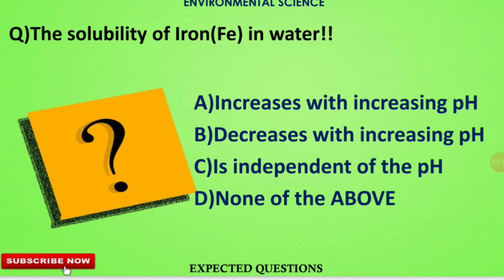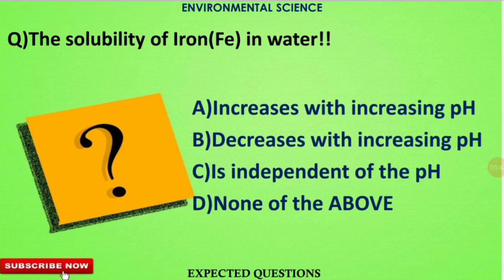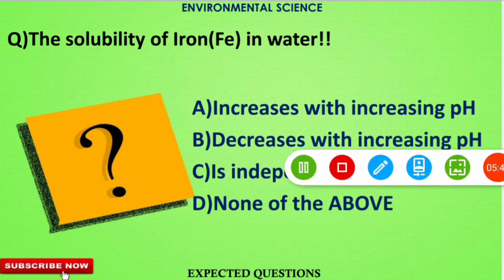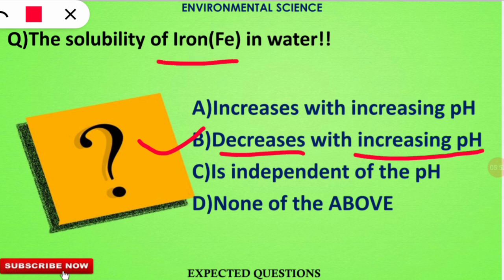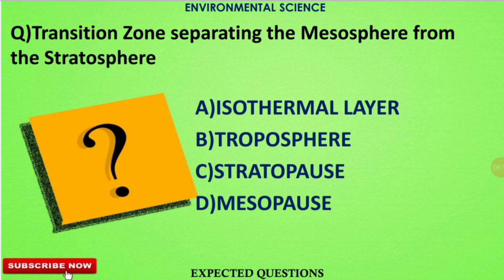The next question is: the solubility of iron in water shows what kind of changes depending upon the pH? The correct option is option B — the solubility of iron decreases when pH is increased. That means increasing pH decreases the solubility of iron in water.